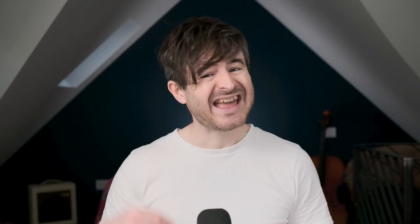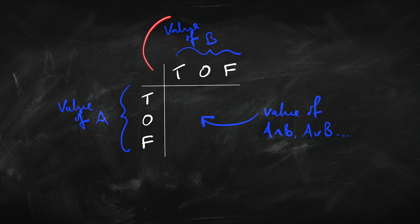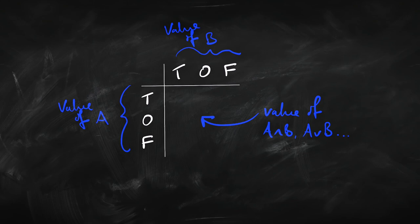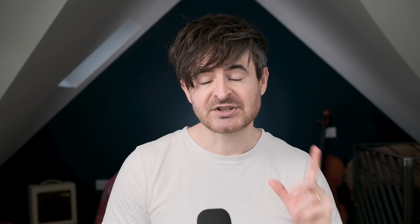Now let's look at how it goes for the other connectives — and, or, if-then. I'm going to set these out as a truth matrix rather than a truth table — it gets a bit easier now that we've got three values in play. On the left side we have the value of A — true, other, or false — and at the top the value of B — true, other, or false. In the middle we write the value you get for a given combination, say A is false and B is other.